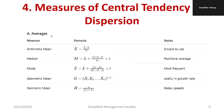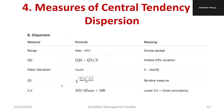Regarding measures of central tendency, the formulas for arithmetic mean, median, mode, geometric mean, and harmonic mean are very important. Please make a note of each individually. Arithmetic mean is the sum of observations divided by the number of observations. The median formula and mode formula are also available, along with geometric mean and harmonic mean.